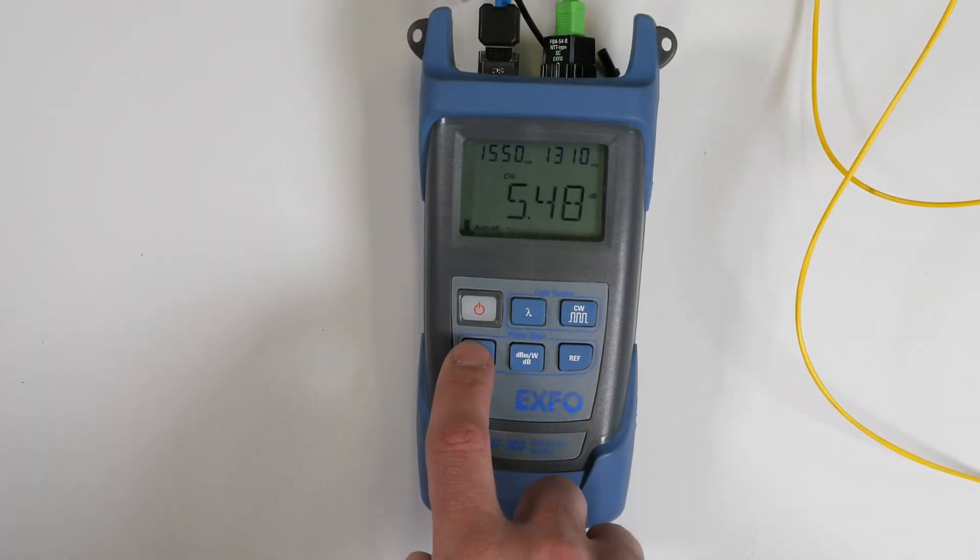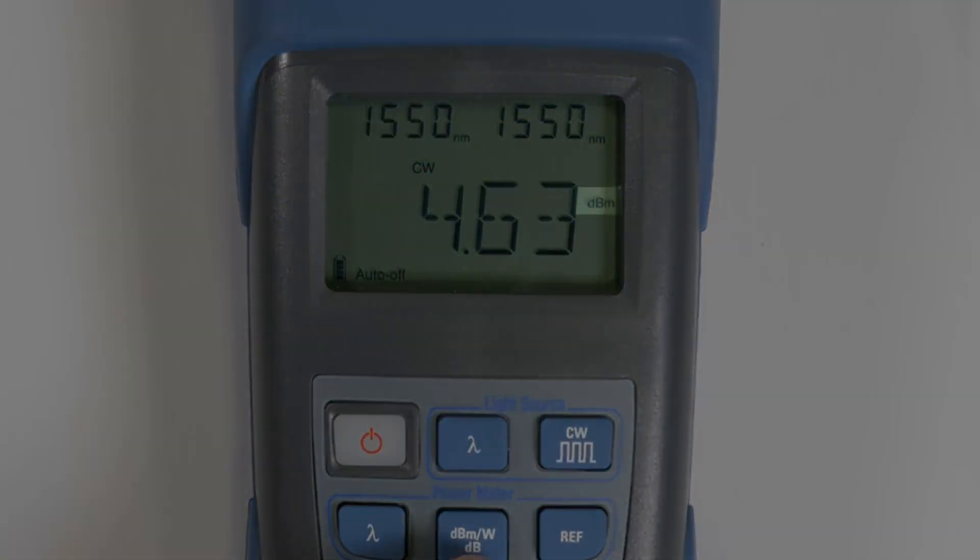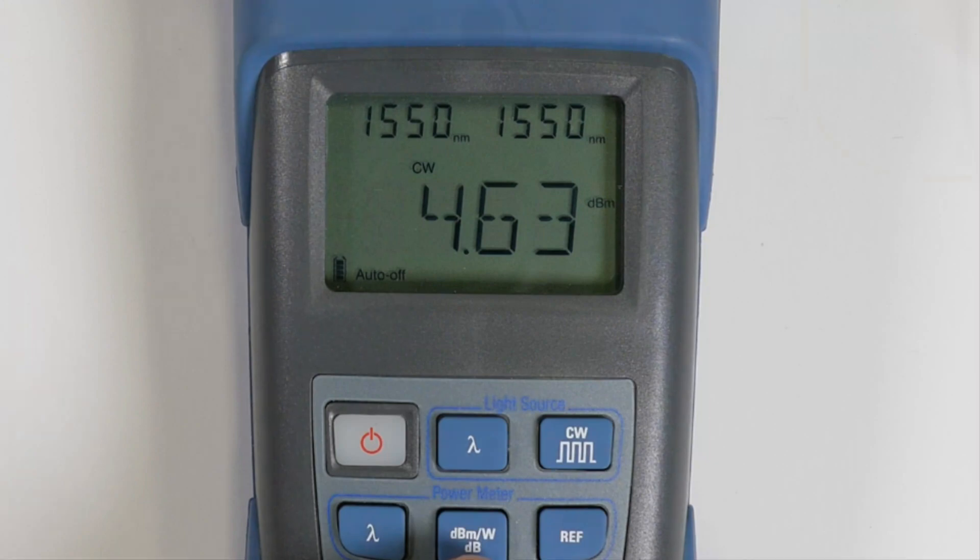Activate the light source and check the wavelengths are the same for the source and power meter. The power is currently displayed in dBm, which is the absolute power value.